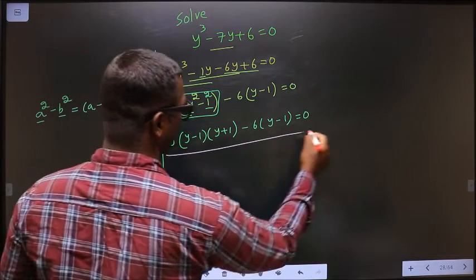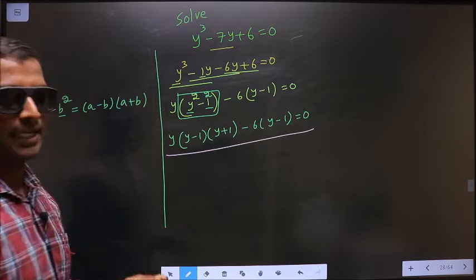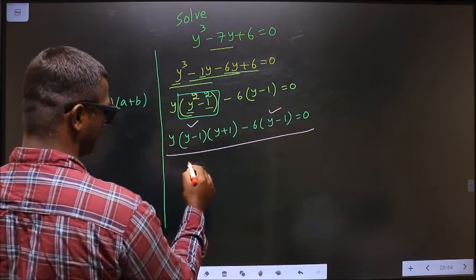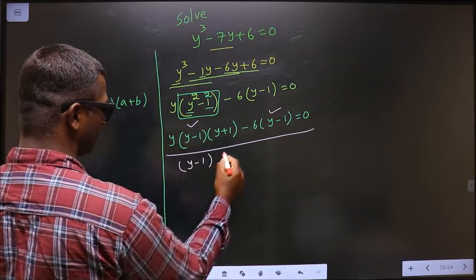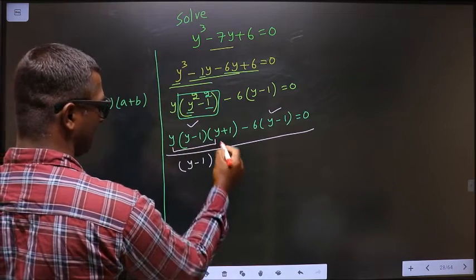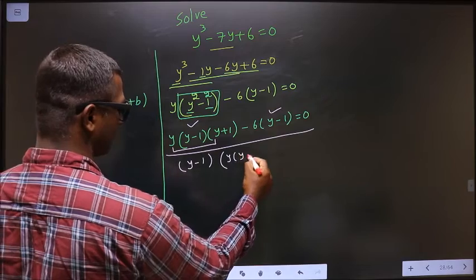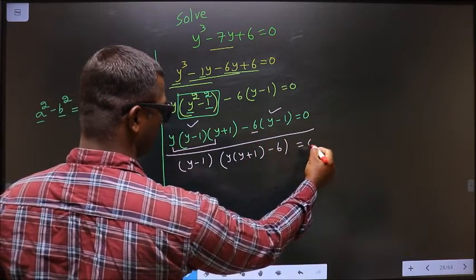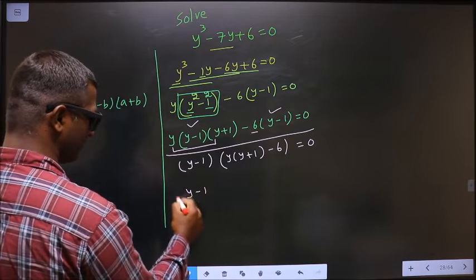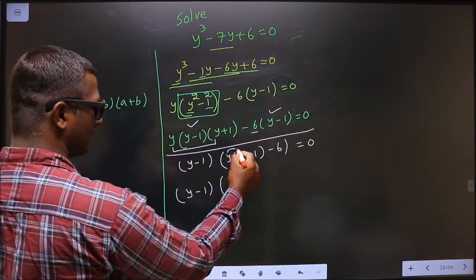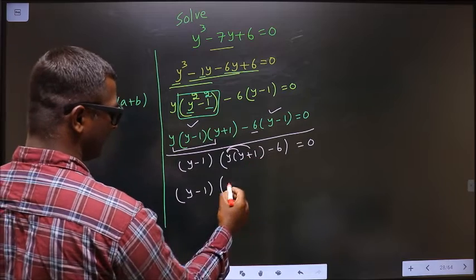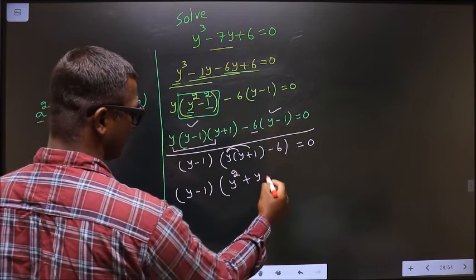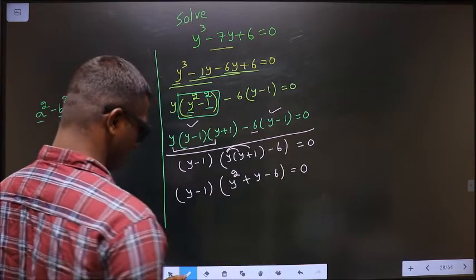Minus 6 times y minus 1 equal to 0. Now from this entire equation, what can be taken out common is y minus 1. So here I get y times y plus 1 and here minus 6 equal to 0. Now open up the bracket: y into y is y squared, plus y into 1 is y, minus 6 equal to 0.